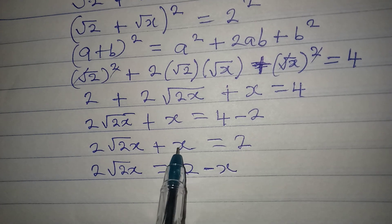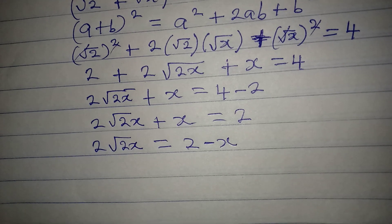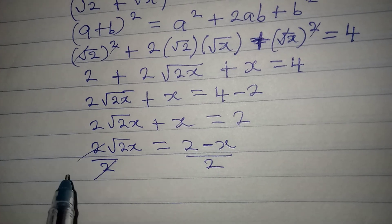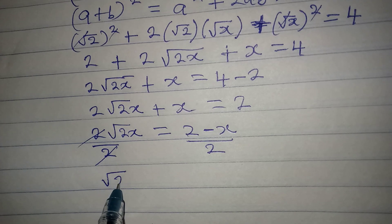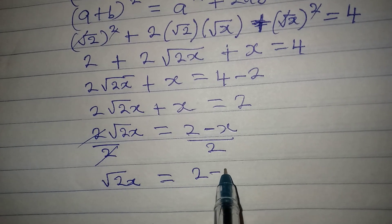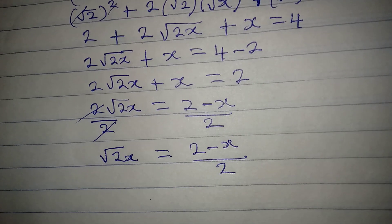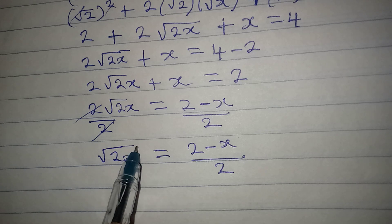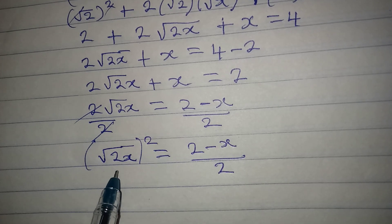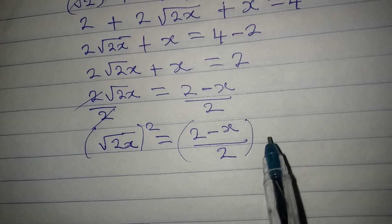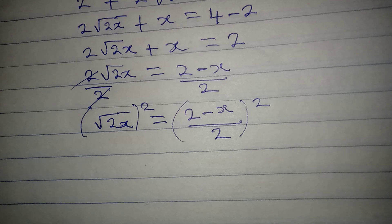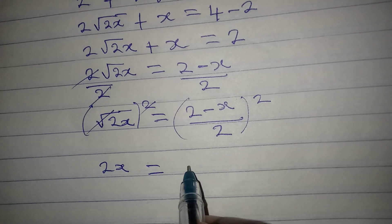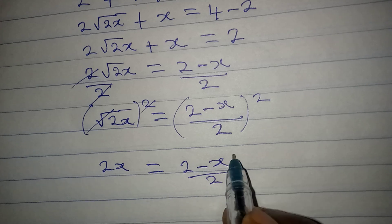The 2 comes first on the right and x becomes negative. The next step is to divide both sides by 2, so root 2x equals (2 minus x) over 2. You might be tempted to cancel the 2s but that would be wrong. The next step is to square both sides to eliminate the square root from the left hand side. Squaring gives 2x equals (2 minus x) over 2, squared.